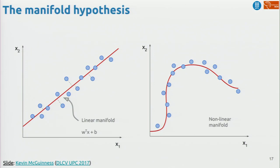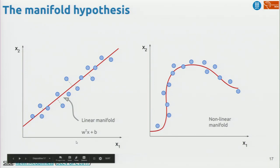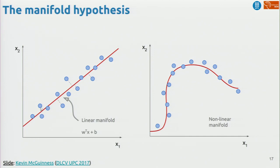What does the manifold assumption mean? Imagine a feature space of only two dimensions. We can assume that our data lies in a linear space, and whatever sample we have, we project it onto this line. That helps in solving another task if the manifold is linear. And if it's nonlinear, we can also learn a nonlinear manifold — and whatever input data we have, we map it to the manifold.